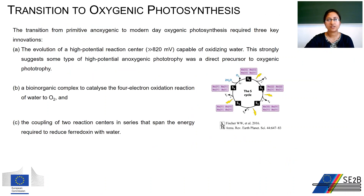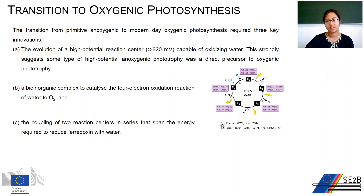The transition from primitive anoxygenic to modern-day oxygenic photosynthesis required three key innovations: the evolution of a high-potential reaction center capable of oxidizing water, the evolution of a bio-inorganic complex to catalyze the four-electron oxidation of water to produce oxygen, and the coupling of two reaction centers in series.